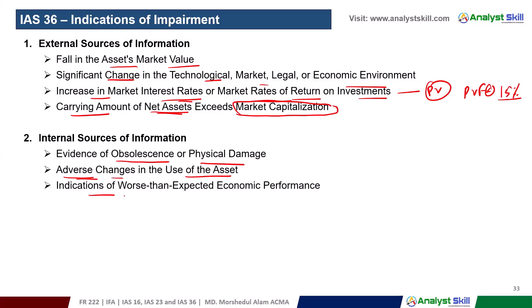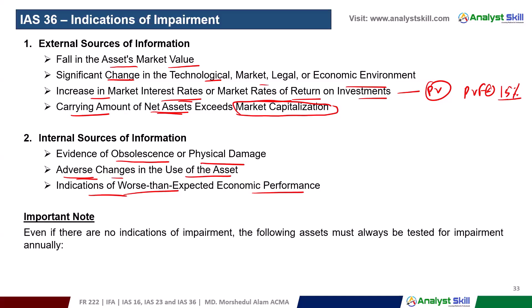Another indicator is worse than expected economic performance. If there is a significant impact on economic and financial performance, this is an indication of impairment. Even if there is no indication of impairment, certain assets must still be tested annually.